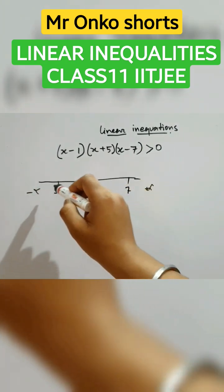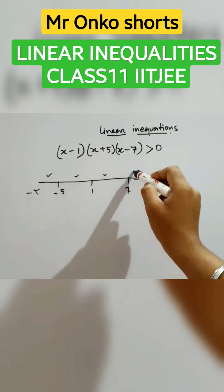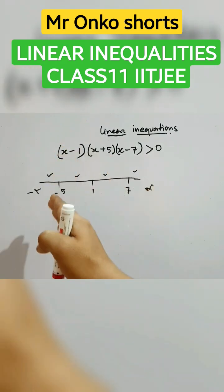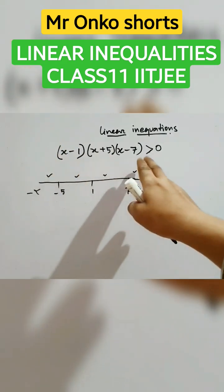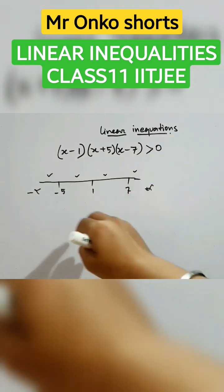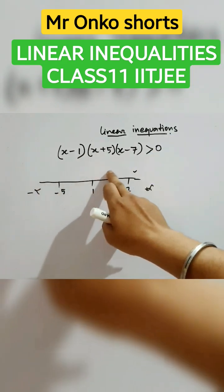So now, first, second, third and fourth. Four zones have been created. We have to check each of the regions with the satisfaction of the greater than sign. So let's check the first one.